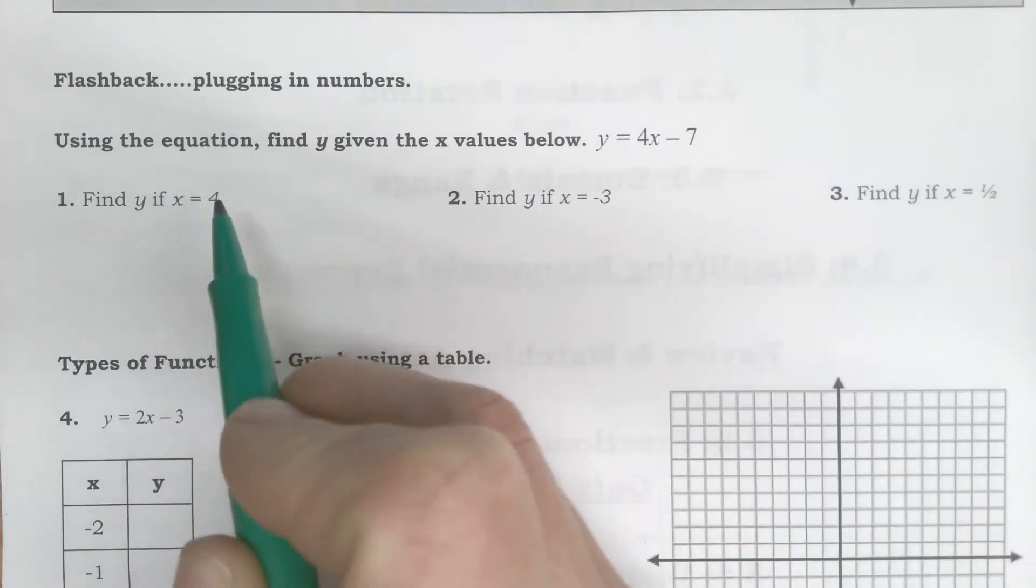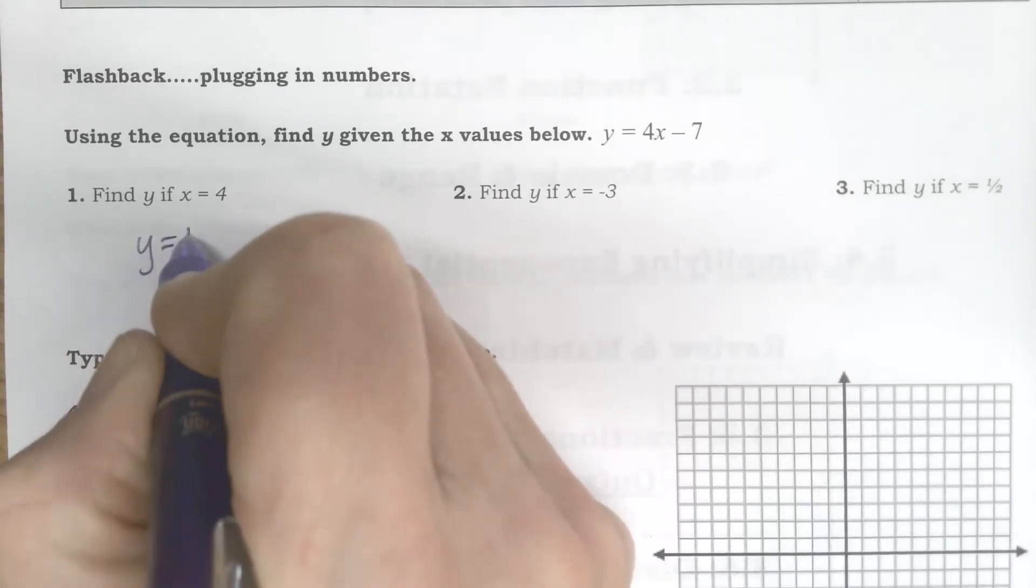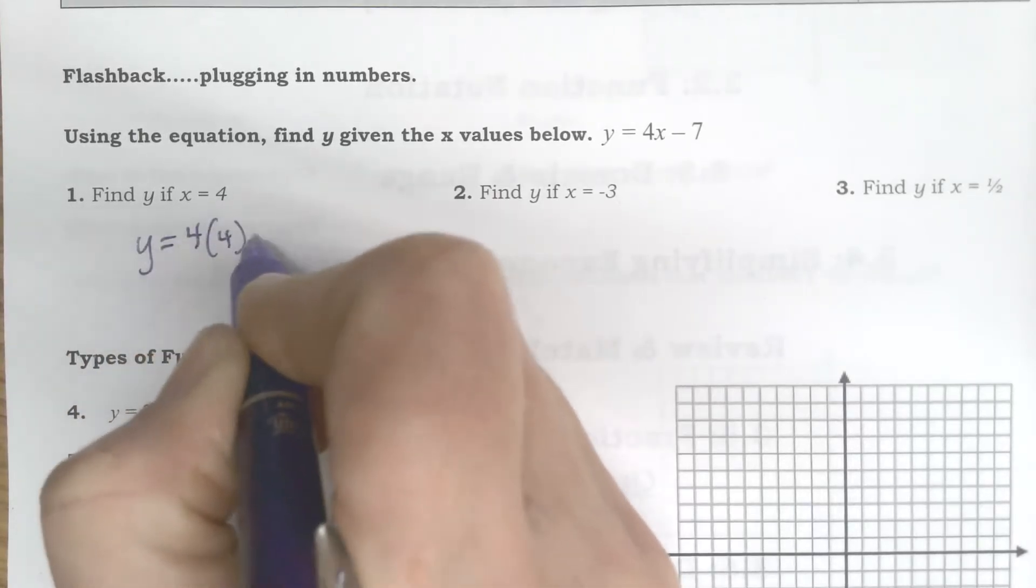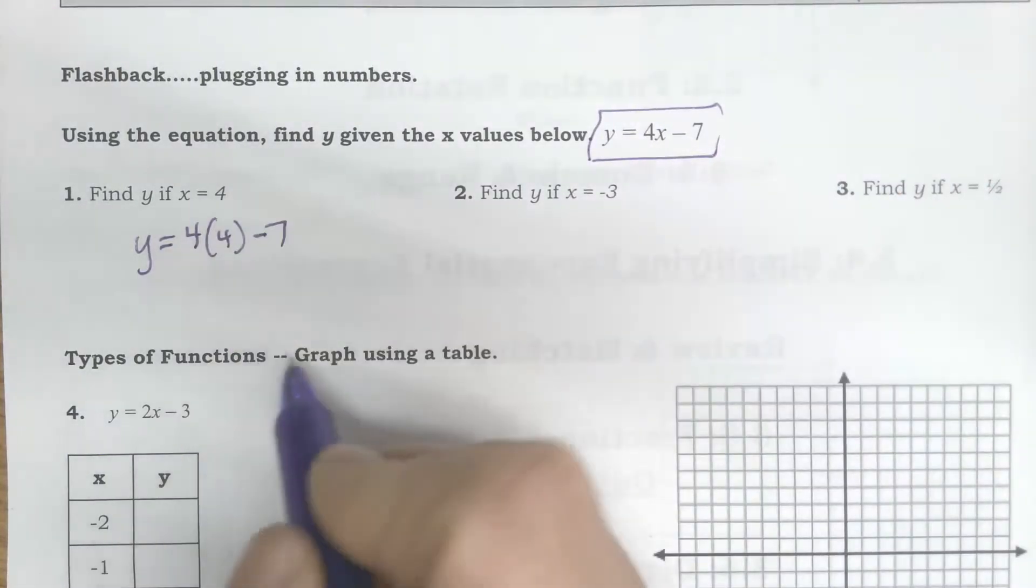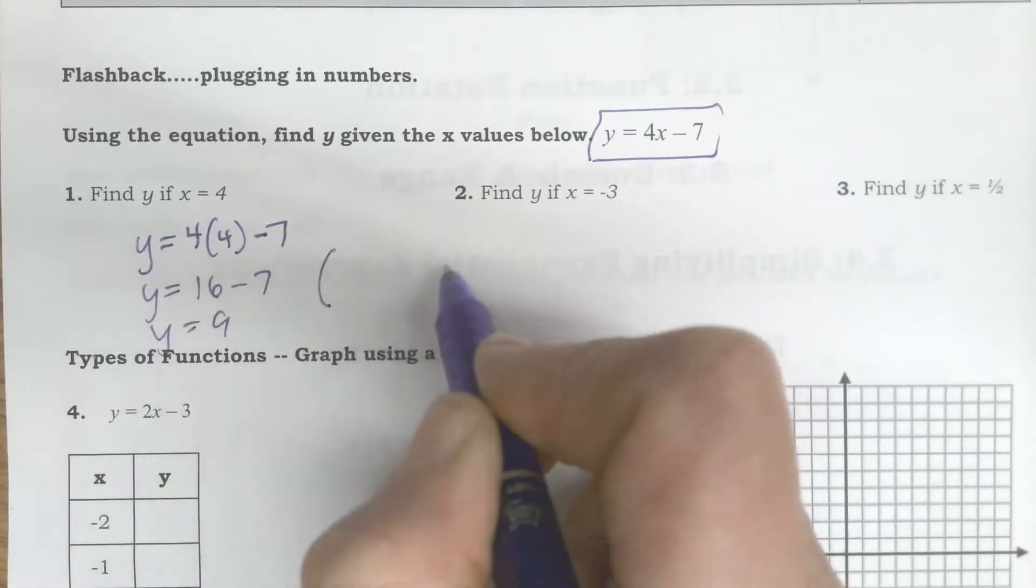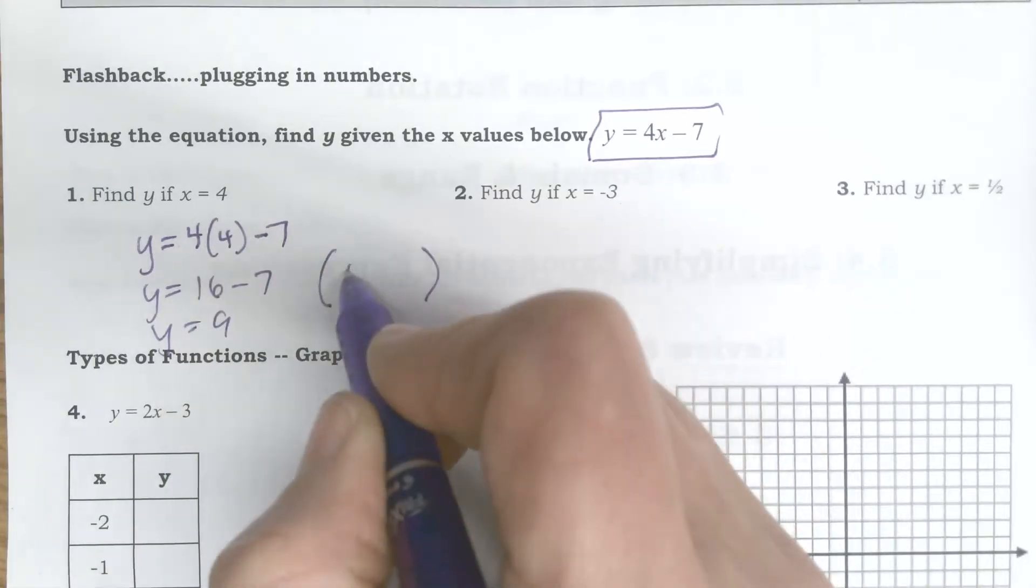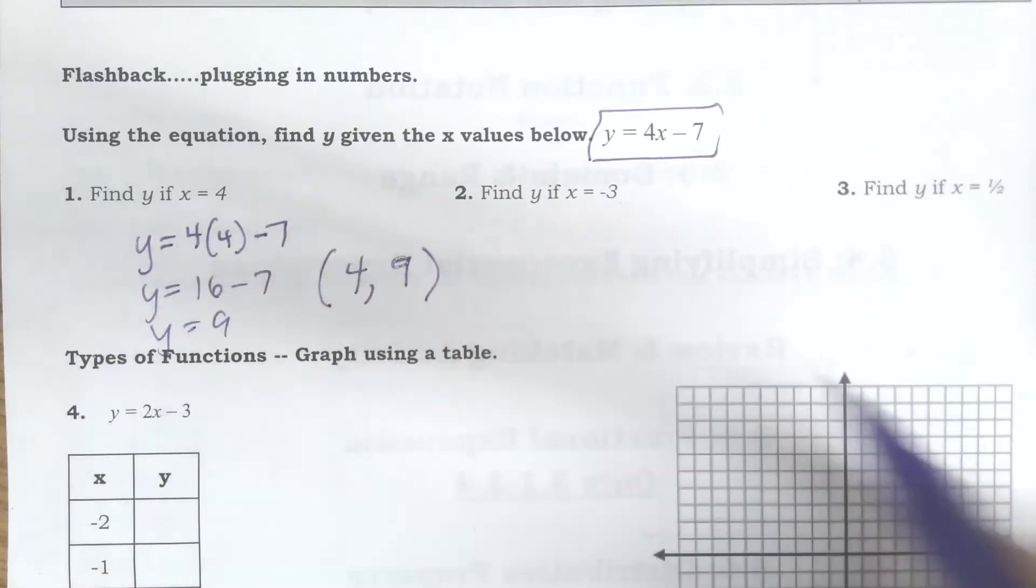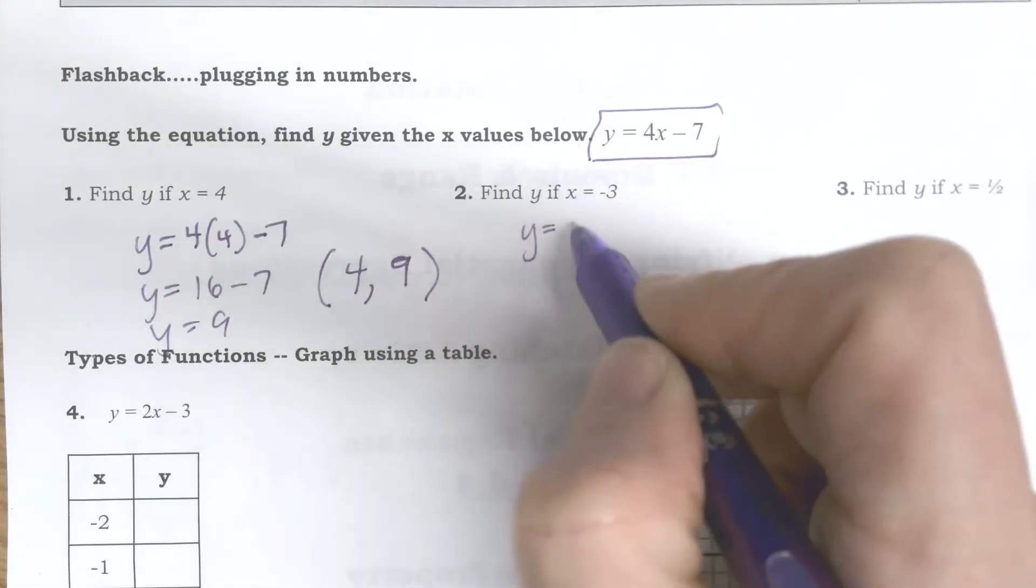So when I look at a problem like this it says find y if x is 4. That just means that I plugged in 4 for x. So y equals 4 times 4 minus 7. I'm using this function that I have up here. So y equals 16 minus 7, or y equals 9. And so if I'm going to plot that on a graph, which is what we're going to be doing, I plot that with the x value of 4, my y value is 9.